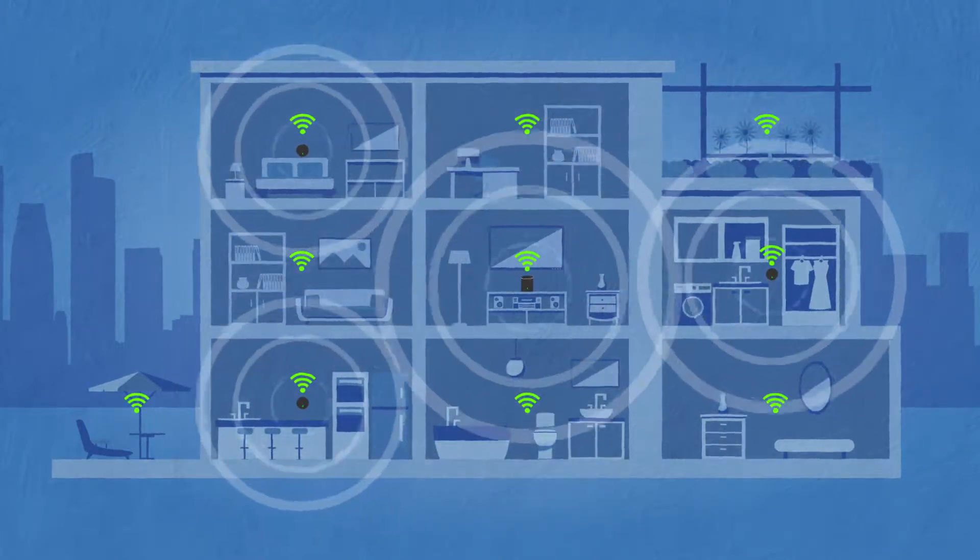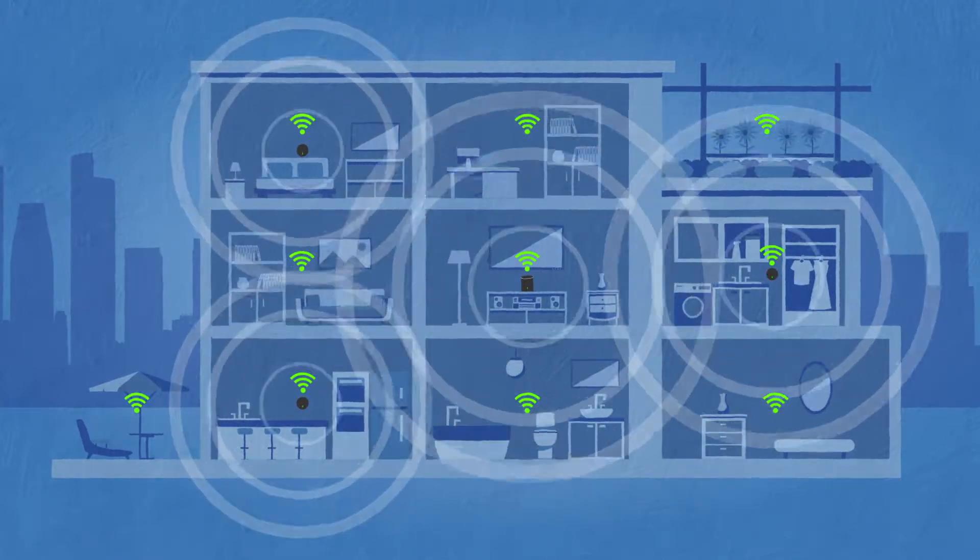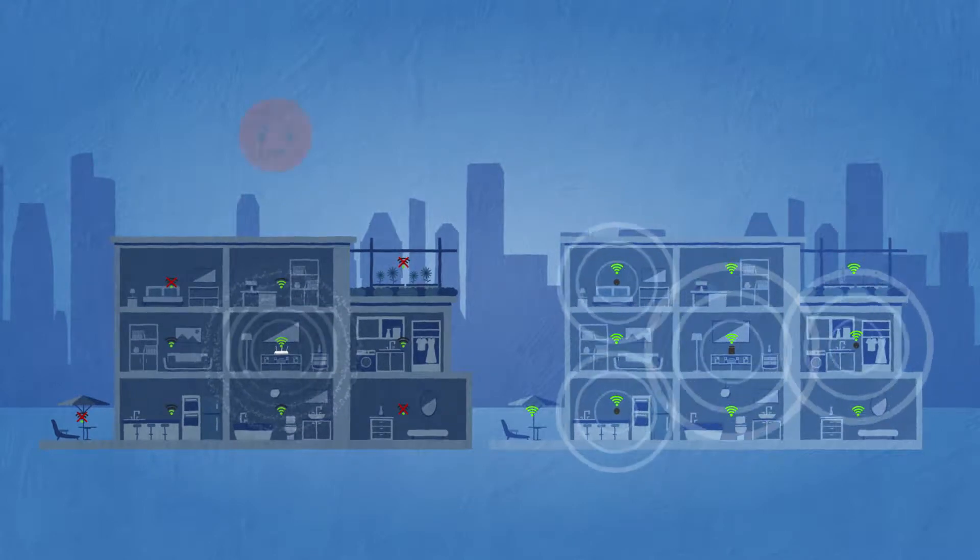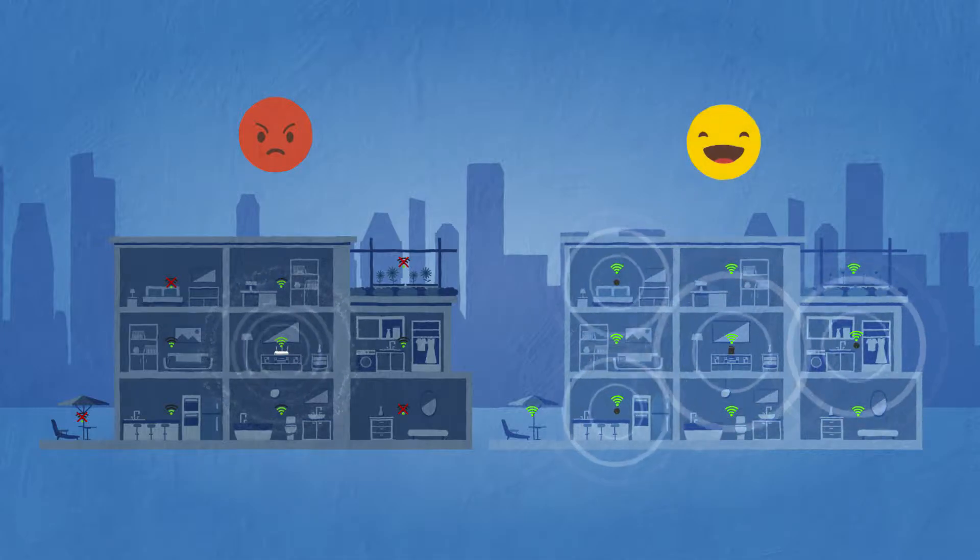Devices can automatically connect to the closest access point in this Mesh system to get a clear signal anywhere. Patios, basements, or that one corner room that never got a signal. With Mesh, you're covered wherever you go.